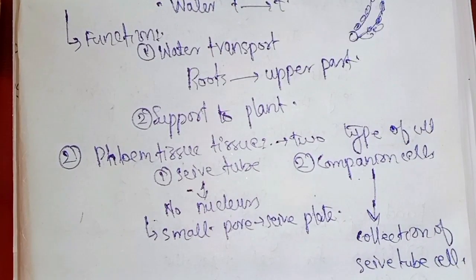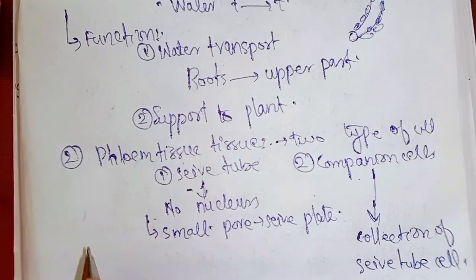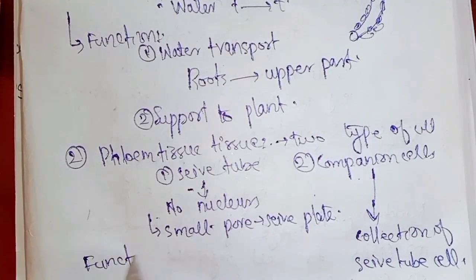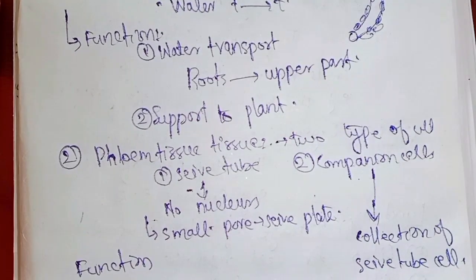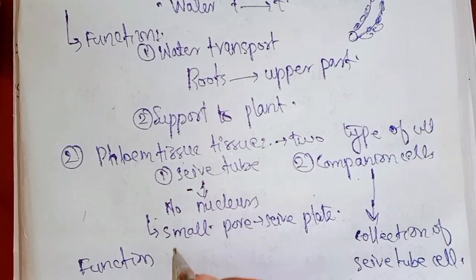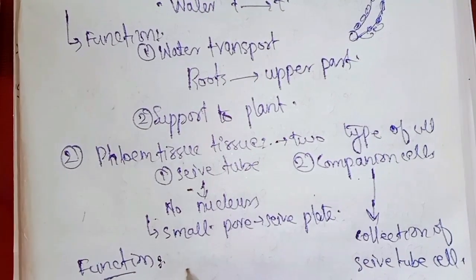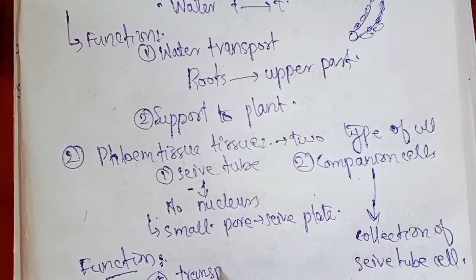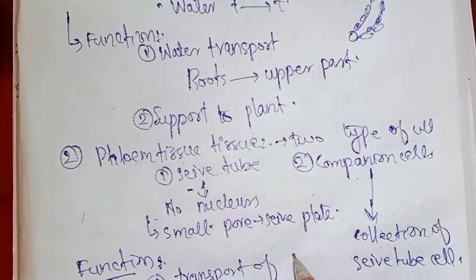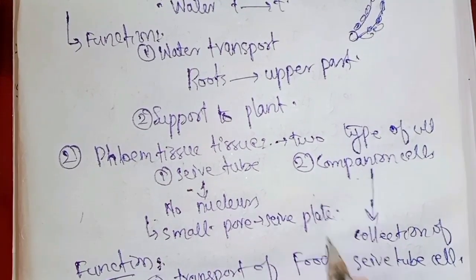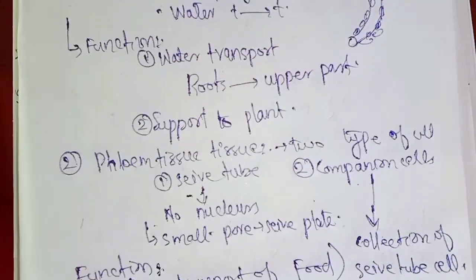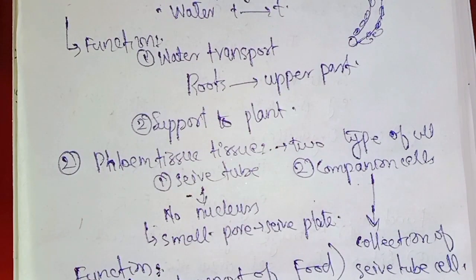The last function of phloem tissue is the transport of food. Xylem tissue is responsible for the transport of water, while phloem tissue is responsible for the transport of food.